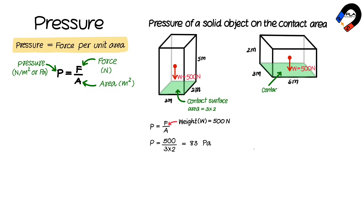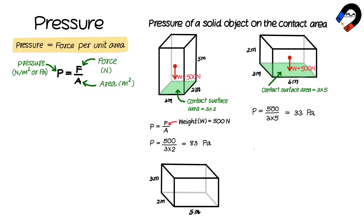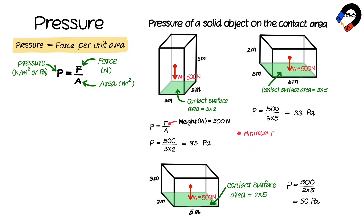The same cuboid solid laying on the contact surface area of 3 meters by 5 meters gives a pressure of 500 divided by 3 times 5, which equals 33 pascals. When laying on the area of 2 meters by 5 meters, the pressure is 500 divided by 2 times 5, which equals 50 pascals.